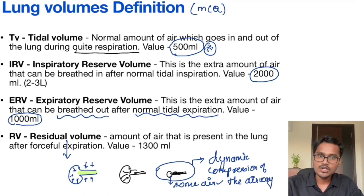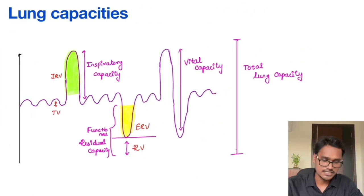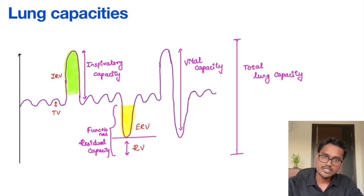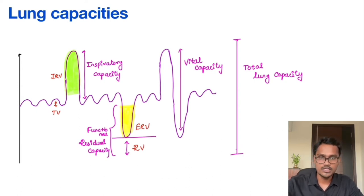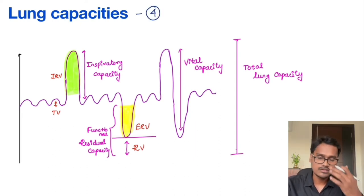That is all about our lung volumes — we have discussed four lung volumes. Now let us discuss the lung capacities. In lung capacities, it is usually the addition of a few volumes. There are four lung capacities, just as there are four lung volumes.